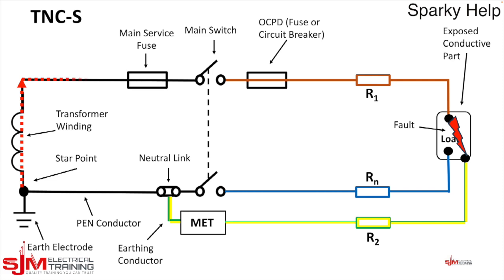Now current will flow and it will flow in this direction. And then up through the earthing conductor and down through the return PEN conductor. So there we go. There's the earth fault loop path for a TNC-S.